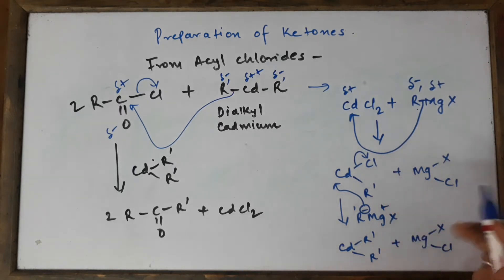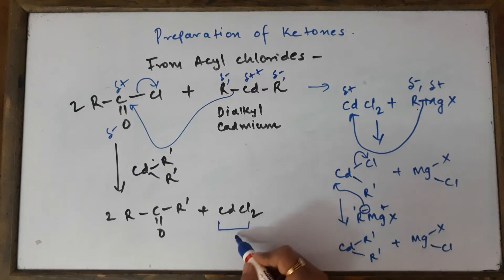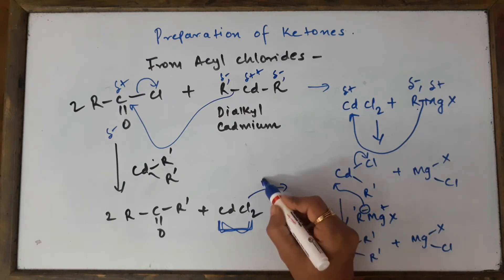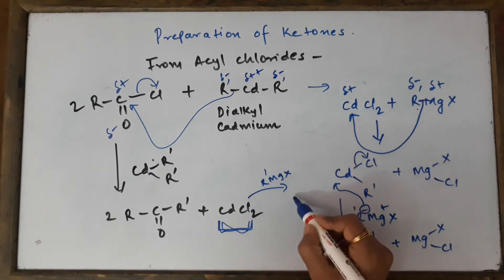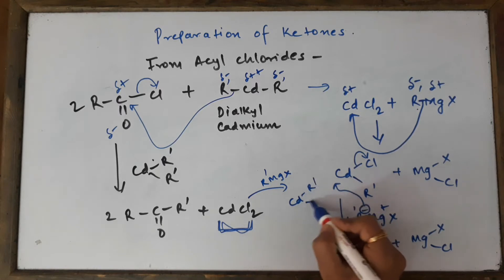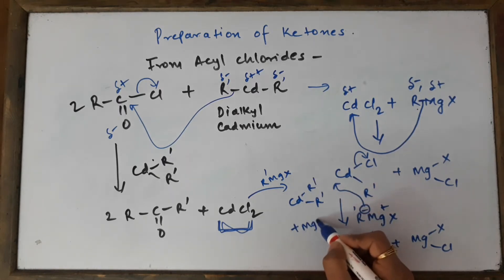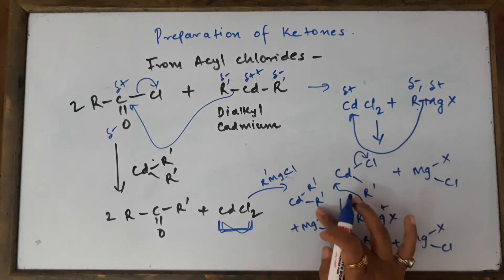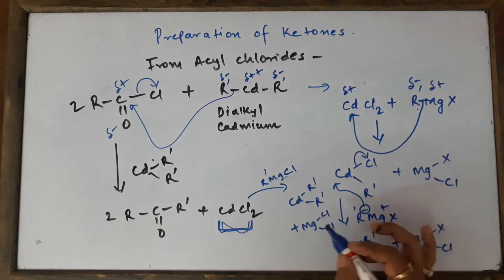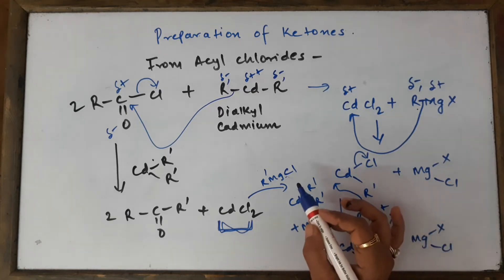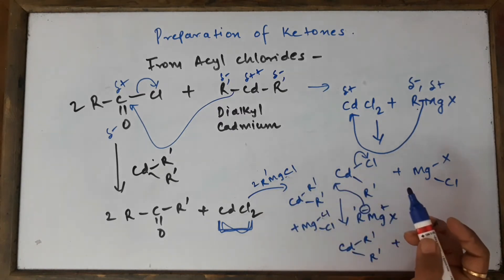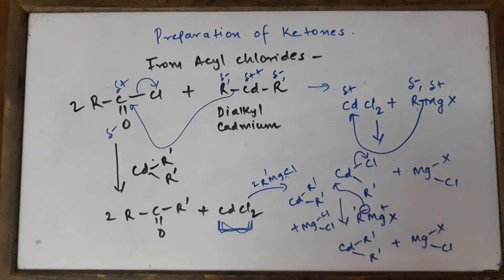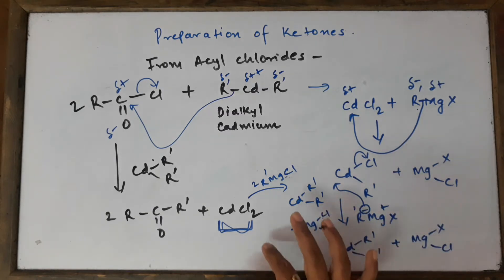This is a simple technique. The byproduct is cadmium chloride — we can recycle and reuse it by adding just Grignard reagent R'MgX two times to get Cd(R')₂ plus MgXCl. Balancing is not required in organic chemistry, so you can do it or leave it. That was the method of preparation of ketones from acyl chloride — quite simple and not that challenging.